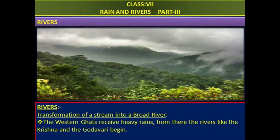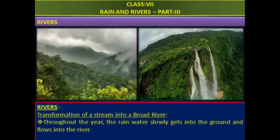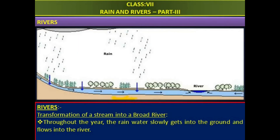The Western Ghats receive heavy rains. From there, rivers like the Krishna and the Godavari begin. River Godavari originates in the Western Ghats at Tryambakeshwar in the Nashik district of Maharashtra, about 80 kilometers from the Arabian Sea at an elevation of 1067 meters. It deposits in the Bay of Bengal. The river Krishna originates in the Western Ghats at Mahabaleshwar in Satara district of Maharashtra, about 64 kilometers from the Arabian Sea at an elevation of 1337 meters. It also deposits in the Bay of Bengal. Throughout the year, rainwater slowly gets into the ground and flows into the river.